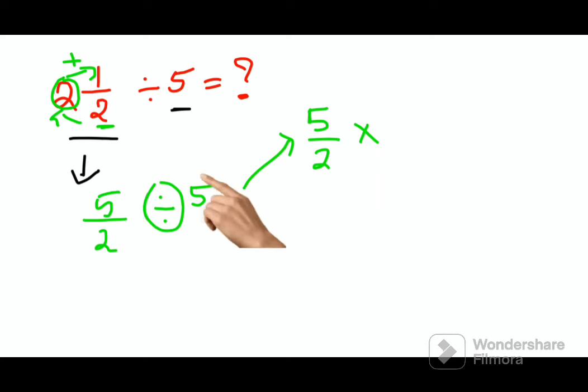So 5 upon 1, because there is nothing in the denominator of 5, it is taken as 1. So 5 upon 1 can be reciprocal and becomes 1 upon 5. Now if you look closely, 5 and 5 gets cancelled, so 1 upon 2 is your answer.